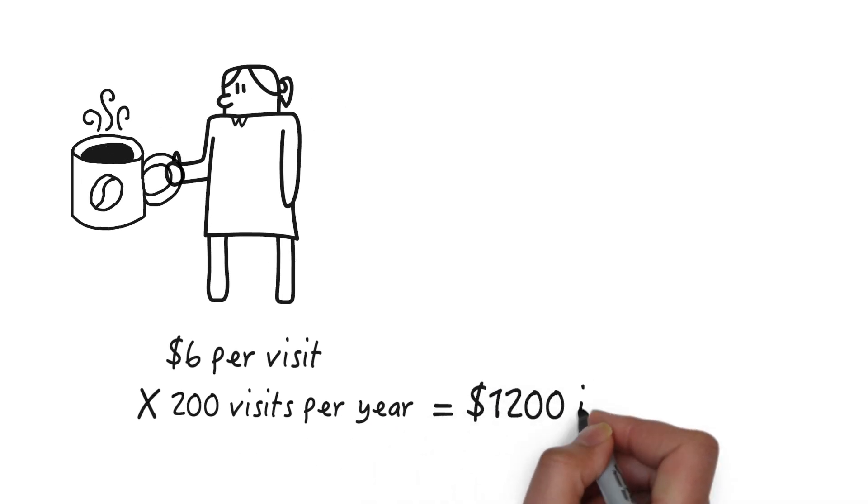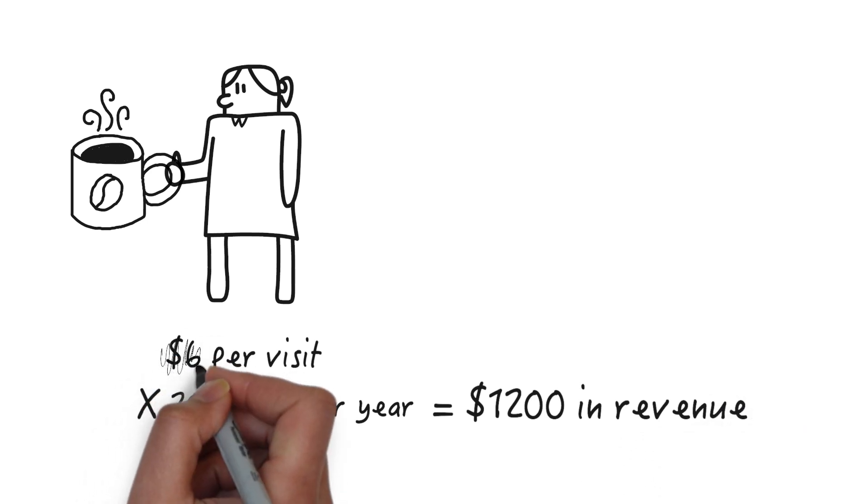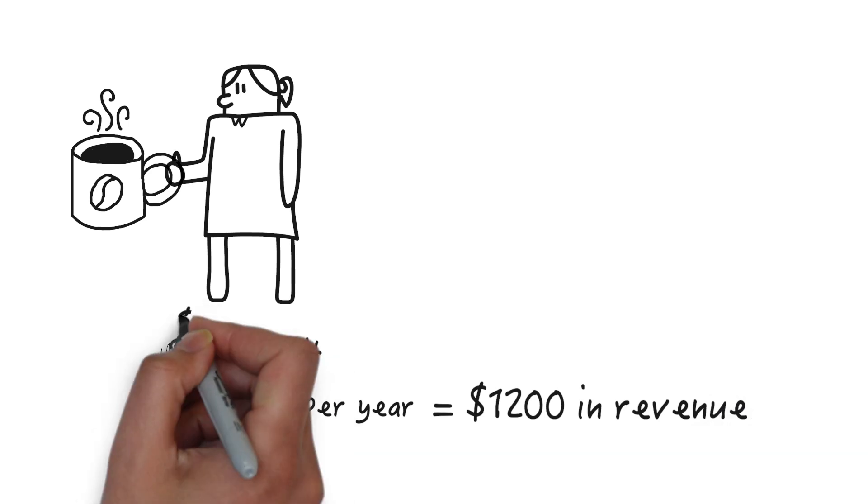That is $1200 in annual revenue per customer, but the contribution margin is only $3 per transaction because of all the variable costs that go into making a cup of coffee. So the annual profit contribution per customer is $600.